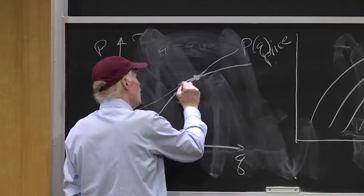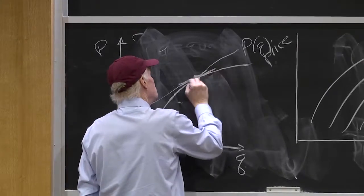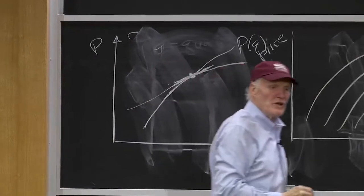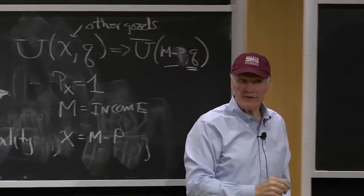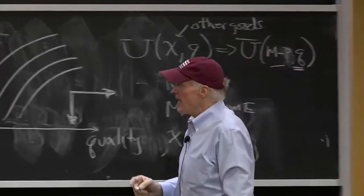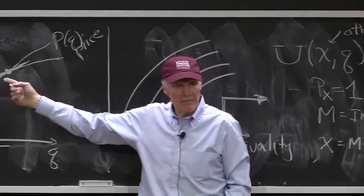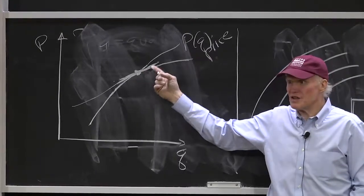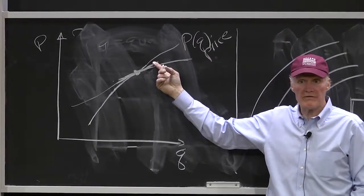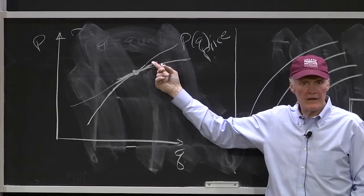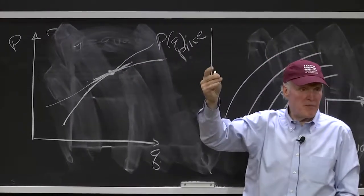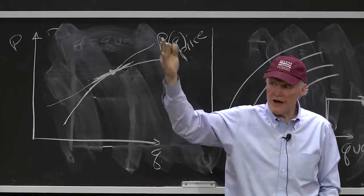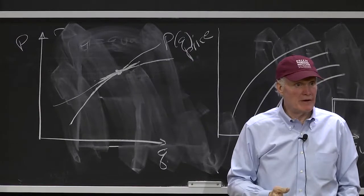And if we looked at the slope, therefore, of the price quality tradeoff, we could get a measure of his marginal willingness to pay for quality, right? That is, we would know how much this consumer is willing to pay to get a little bit better TV set by measuring the slope of this price quality tradeoff, right? He's buying that 50-inch TV, we know how much it costs to buy a little bigger one, we could figure out his marginal value of having a slightly bigger TV, okay?